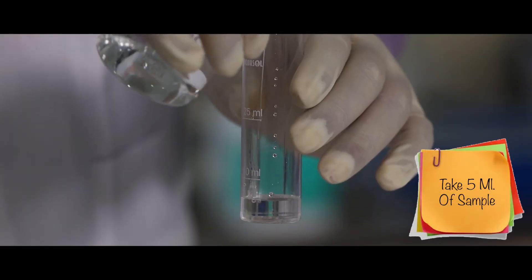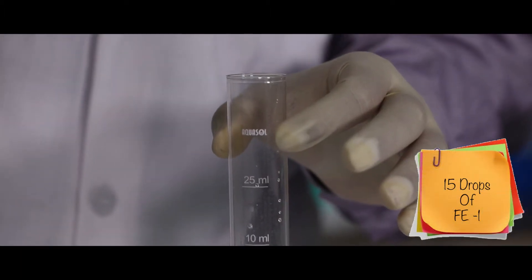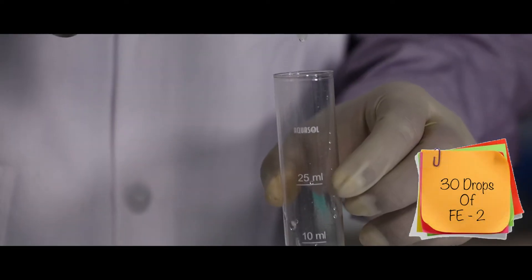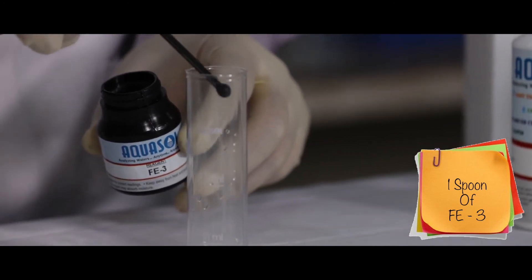Start the test by collecting 5 ml of sample. Add 15 drops of Fe1 reagent and 30 drops of Fe2 reagent. Add one spoonful of Fe3 and mix well.